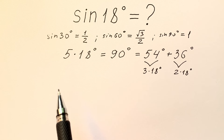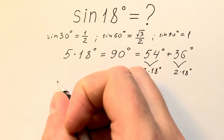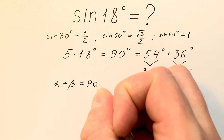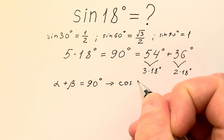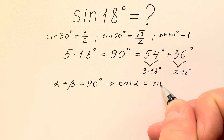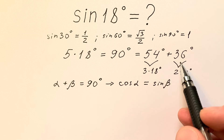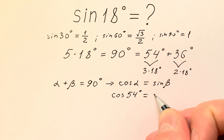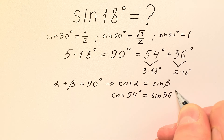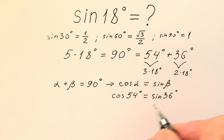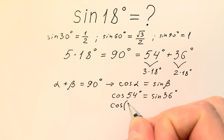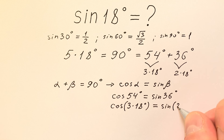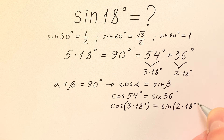Knowing the trigonometric properties, we understand that if alpha plus beta equals 90 degrees, then cosine alpha equals sine beta. So we understand that cosine 54 degrees equals sine 36 degrees. Or we can write it as cosine of 3 times 18 degrees equals sine of 2 times 18 degrees.